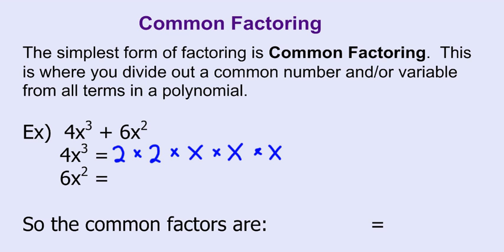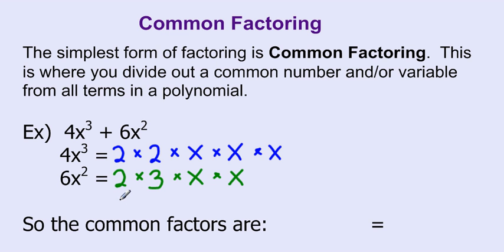If we do the same thing with 6x squared, we're going to have 2 times 3, so that will give us our 6, and now we have x squared, which we can get by multiplying x times x. So the simplest form of 6x squared is 2 times 3 times x times x. Now we're going to look at the common factors — what factors are common in both of these?